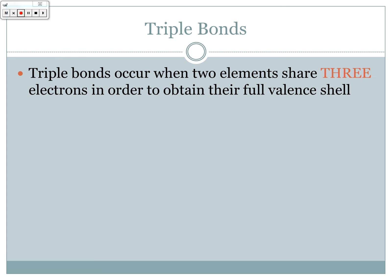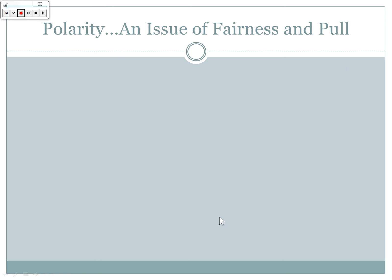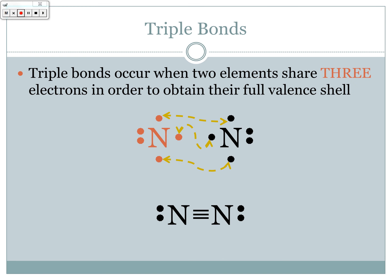Triple bonds occur when two elements have to share three electrons each in order to obtain their full valence shell. For example, nitrogen has five electrons in its valence shell and needs to gain three. Two nitrogen atoms can share their three lone electrons to form a triple bond so that each gains its full octet. Those three pairs of electrons form three bonds, leaving one lone pair on each nitrogen — which is how nitrogen likes it — and one triple bond between them.